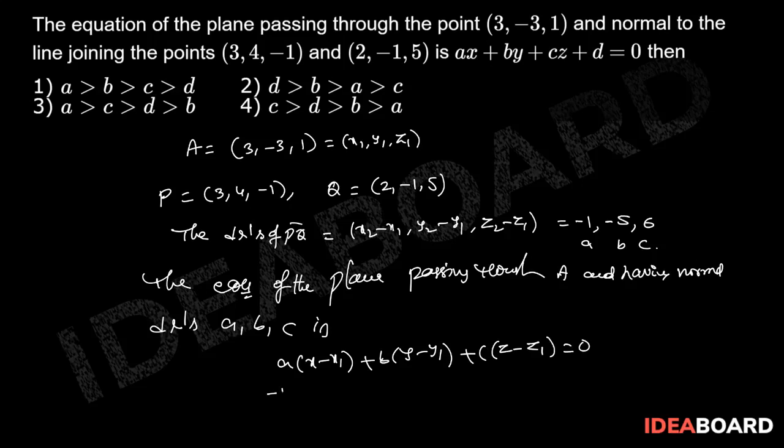that is -1(x - 3) - 5(y + 3) + 6(z - 1) = 0. So that implies x + 5y - 6z + 18 = 0,